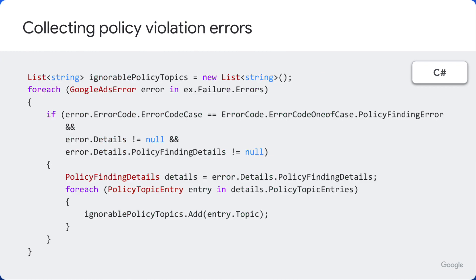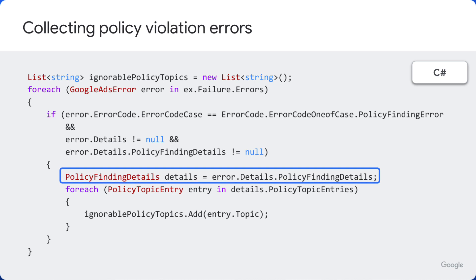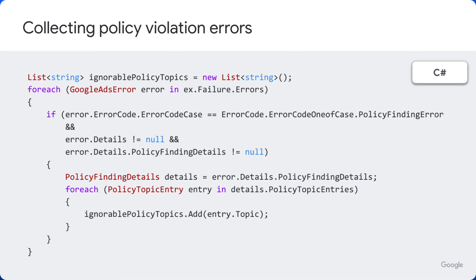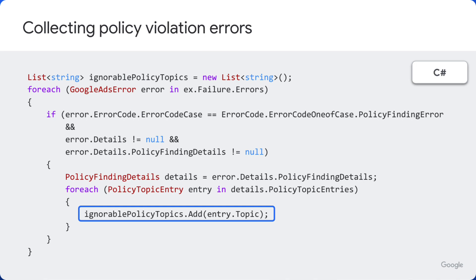Once we receive an exception, we can then retrieve the policy violation errors from the exception that was thrown by retrieving the policy_finding_details field in the error details contained in the exception. Each of these will contain detailed information about the cause that triggered the policy violation exception, but in our example we are only interested in the topic, that is the field that we need to collect for later use when requesting a policy violation exemption.